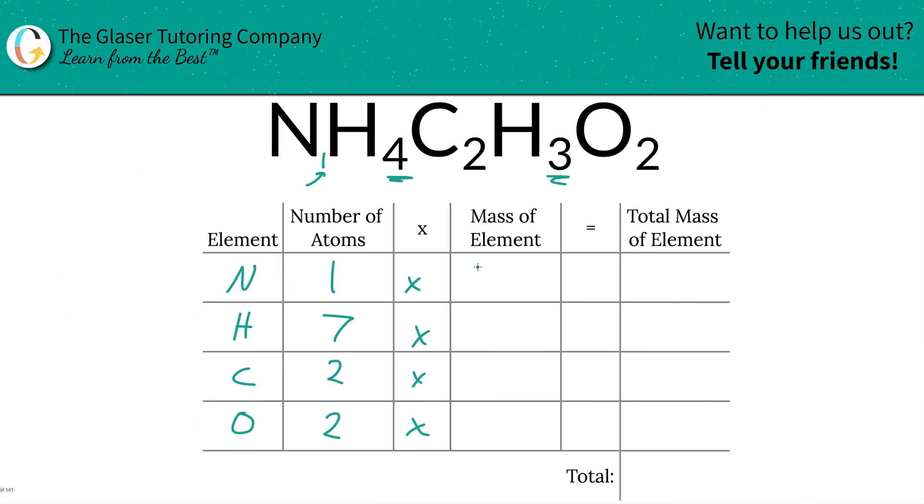So those are the masses that we're going to write down. So nitrogen was 14.01, hydrogen was 1.01, carbon was 12.01, and oxygen is 16. And I wrote down 16.01.